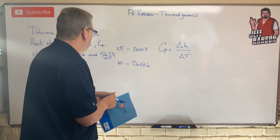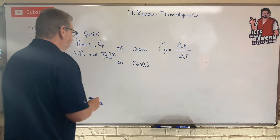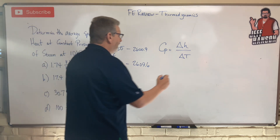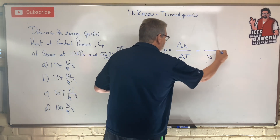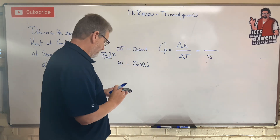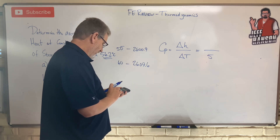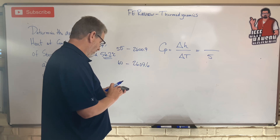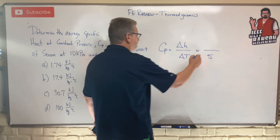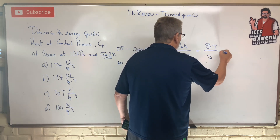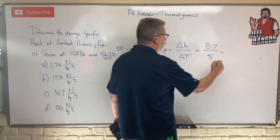On the calculator: the denominator is 5, which is the difference between 55 and 60. The numerator is 2609.6 minus 2600.9, which equals 8.7. So 8.7 divided by 5 equals 1.74. That is our cp value.